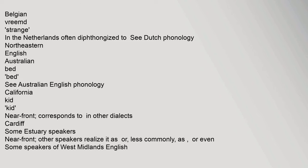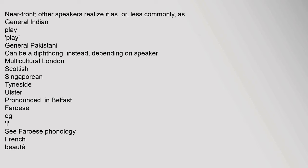Dutch Belgian: in the Netherlands often diphthongized — see Dutch phonology. Northeastern English, Australian: see Australian English phonology. California: near front, corresponds to in other dialects. Cardiff: some estuary speakers near front; other speakers realize it as, or less commonly as, or even some speakers of West Midlands English near front; other speakers realize it as or less commonly. General Indian: can be a diphthong instead depending on speaker. Multicultural London, Scottish, Singaporean, Tyneside, Ulster: pronounced in Belfast. Faroese: see Faroese phonology.